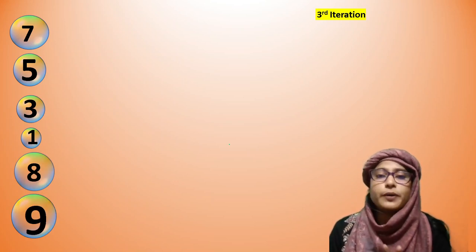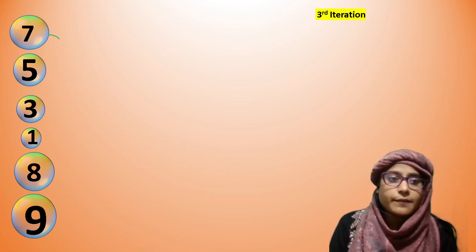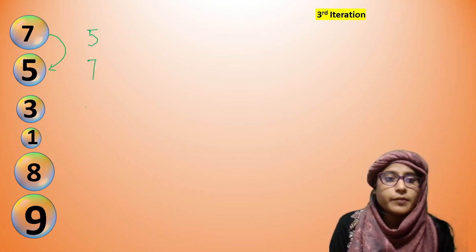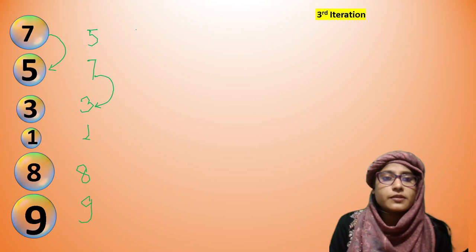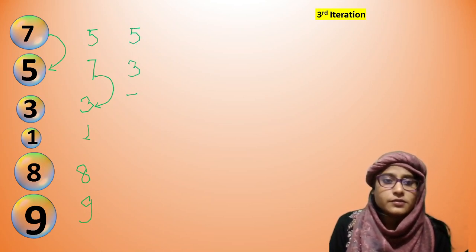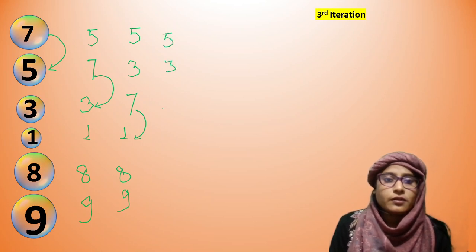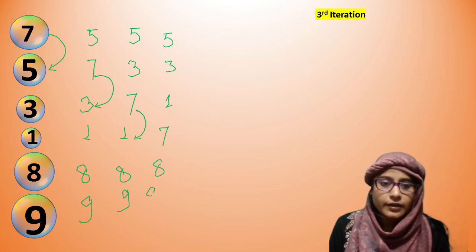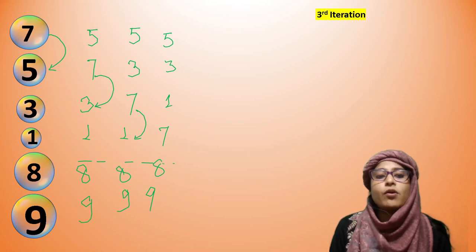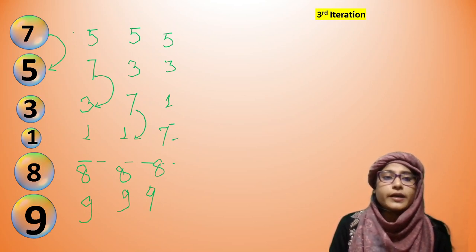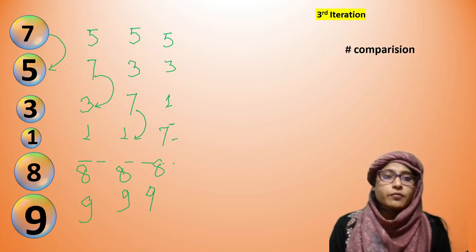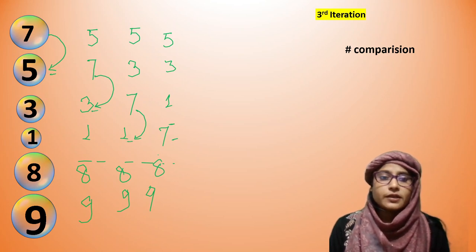Let's move to the third iteration. In the third iteration, two elements have already reached their correct positions. Check 7 greater than 5 — yes, swap. So 5, 7, 3, 1, 8, 9. Again check 7 greater than 3 — yes, swap. Then 7 greater than 1 — yes, swap. We stop comparing at 8 and 9 since they are already sorted. Number of comparisons = 3 times, which is n−3.